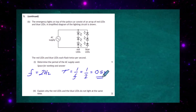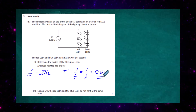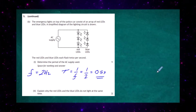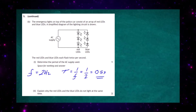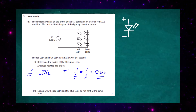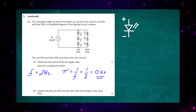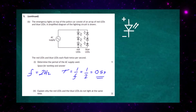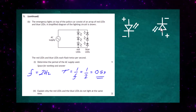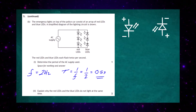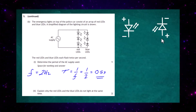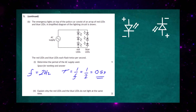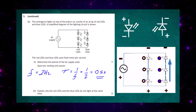Part two: explain why the red LEDs and blue LEDs do not light at the same time. We are dealing with an AC supply which is constantly changing polarity. For an LED to light, the polarity must be configured so that the plus is connected to the triangle part and the minus is connected to the bar part. If configured that way in the circuit diagram, the LED will light. But with AC, the polarity constantly changes, so the other LED set lights when the polarity reverses — that is the configuration in which it lights.